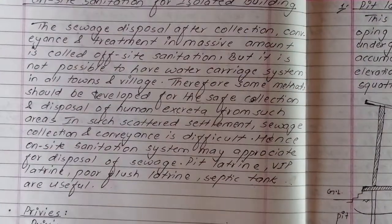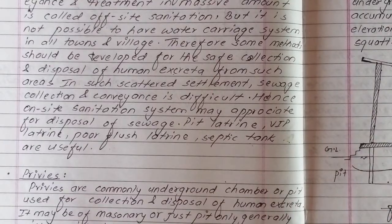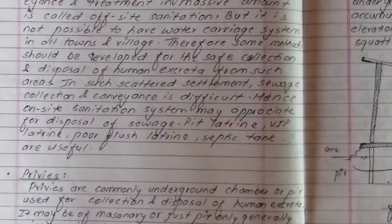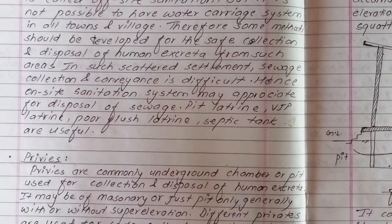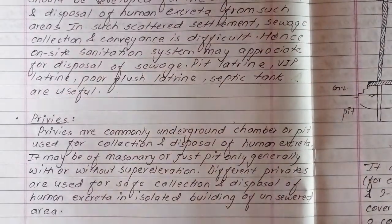Pit latrine, VIP latrine, pour-flush latrine, and septic tank etc. are useful on-site sanitation options. Privies are commonly underground chambers or pits used for collection and disposal of human excreta. They may be masonry or just a pit, generally with or without superstructure. Privies are used for safe collection and disposal of human excreta in isolated buildings and unsewered areas.